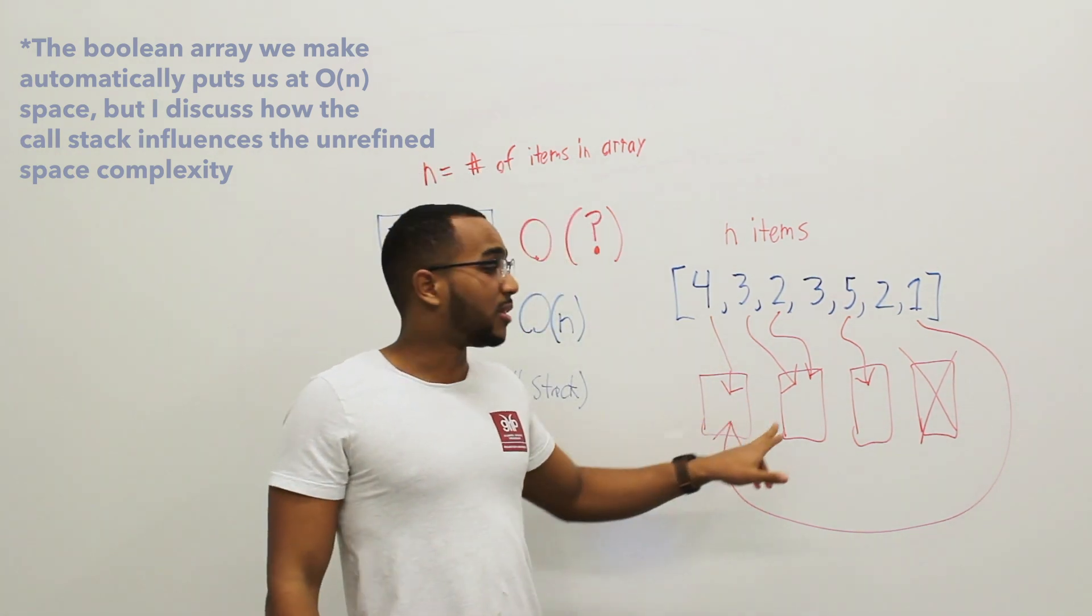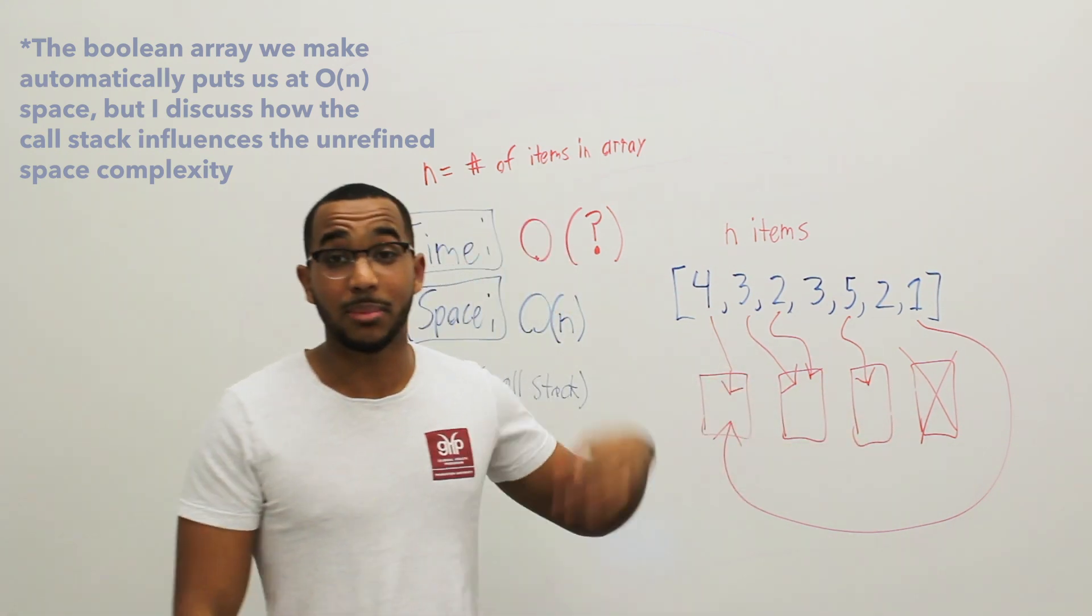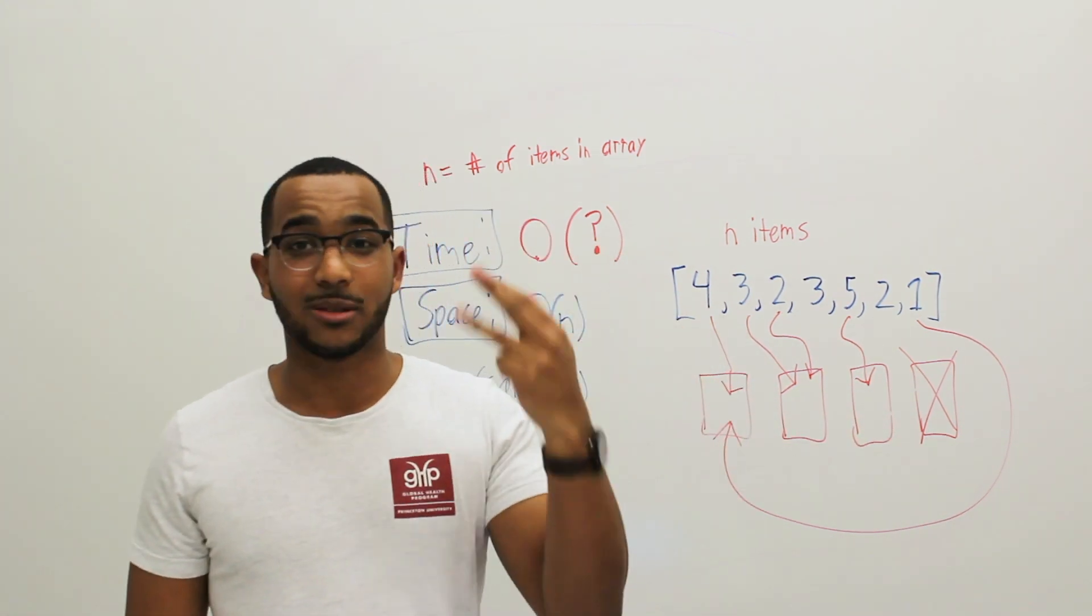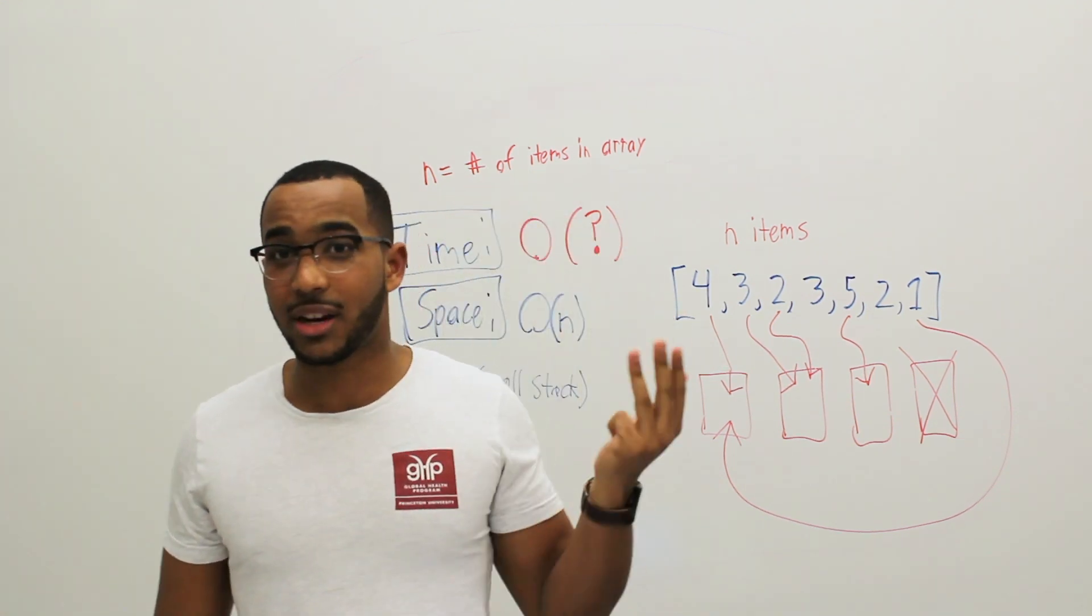The worst case space complexity will be controlled by the call stack in the recursion. And imagine we fill bucket one, we fill bucket two, we fill bucket three, we won't fill the last bucket. Maybe there's one item, maybe there's two items, maybe there's three items. That means we're going to skip the processing of one, two or three items.